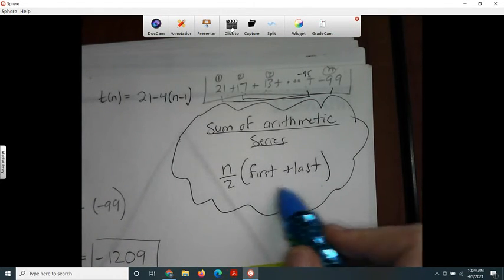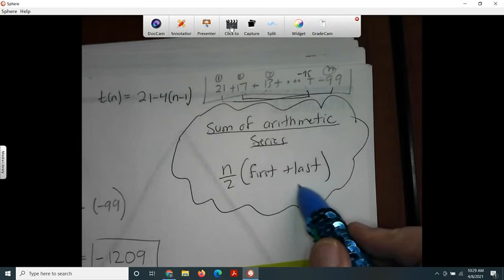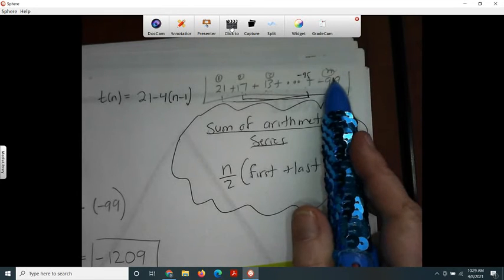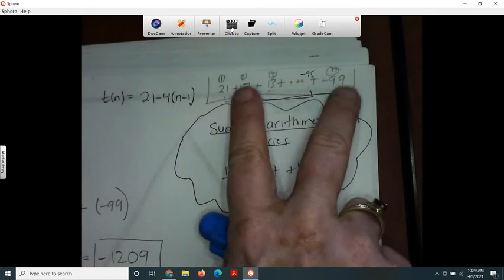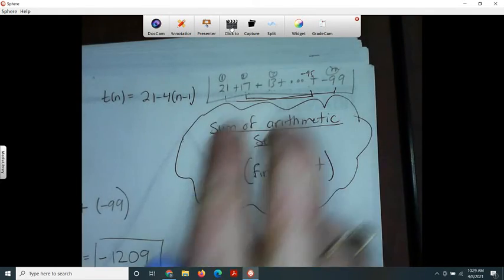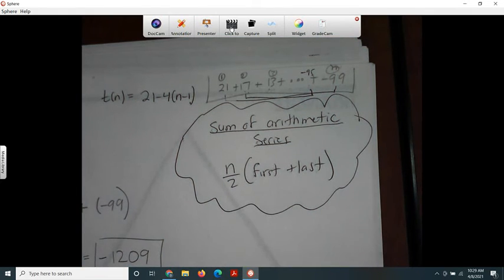And since they're paired up, there aren't going to be n terms—there's going to be n over 2 terms, because they're in pairs. We're counting every two numbers, so that's where this comes from.